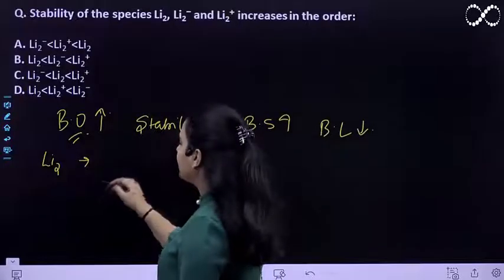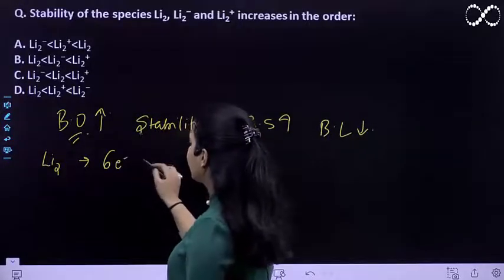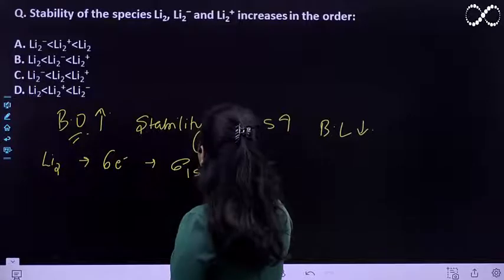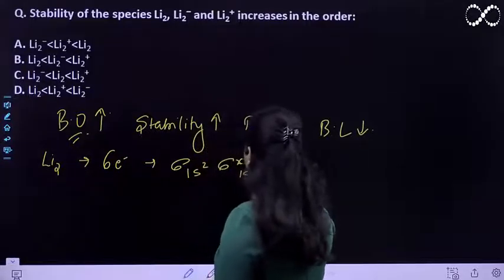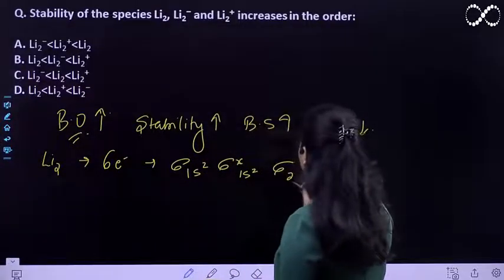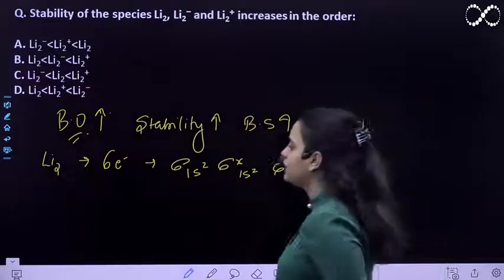How many electrons are there? You have 6 electrons to fill. It will be σ1s², σ*1s², and σ2s². The configuration will be this.